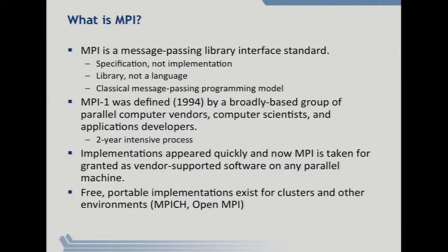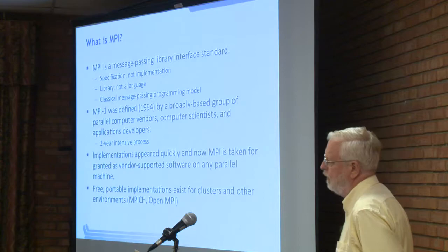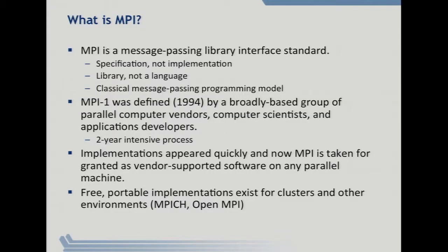Starting from scratch, just for one slide - I think I've used this slide for 10 years at least, unchanged. So what is MPI? It's a library interface standard, so it's a specification, and you don't want to confuse the behavior of some particular implementation with what the standard says. It's a library, not a language. You don't need a compiler; you need a linker. It at least starts off with the classical message-passing model. It was defined in 1994. A group got together starting in 1992 that included parallel computer vendors, computer scientists, and application programmers. That worked out well - the standard reflects their interest in making sure that programs written in MPI would run well on their machines. Implementations appeared very quickly, and now MPI is taken for granted and is usually part of the system.